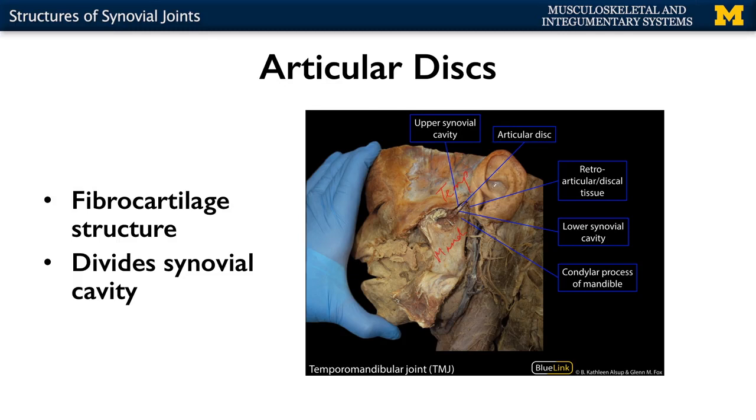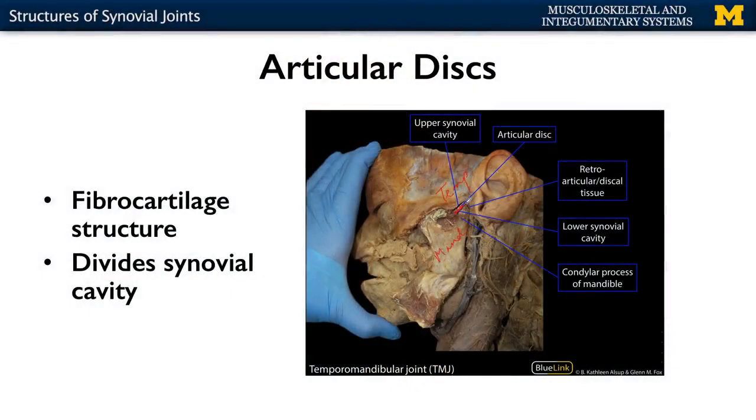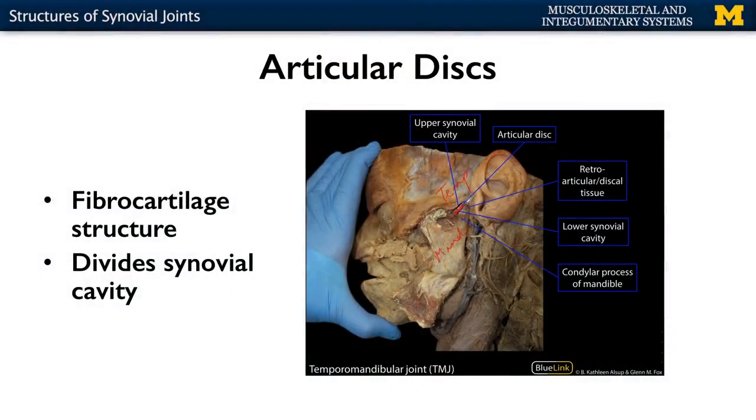You're going to have this fibrocartilage disc right in the middle of that joint, and it allows the joint to be divided into two separate spaces. That's really important for allowing two different types of movement to occur at the TMJ — the one we think about is opening and closing, and also you can jut out your chin: protrusion and retrusion back. Generally, articular discs are associated with two complex and very different movements.